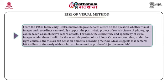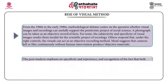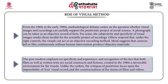From the 1960s to the early 1980s, methodological debates centred on the question of whether visual images and recordings can usefully support the positivistic project of social science. A photograph can be taken as an objective record of facts. For some, the subjectivity and specificity of visual images render them invalid for the scientific project of sociology. Others respond that under right controls, visuals can act as an objective recording method. Mead suggests that cameras left to film continuously without human intervention produce objective materials.